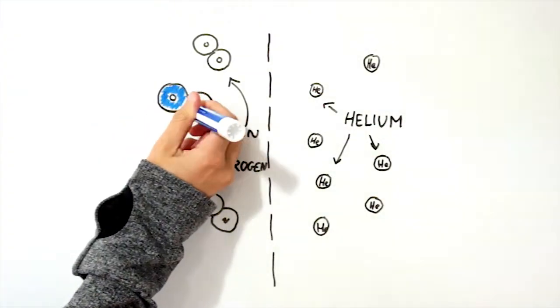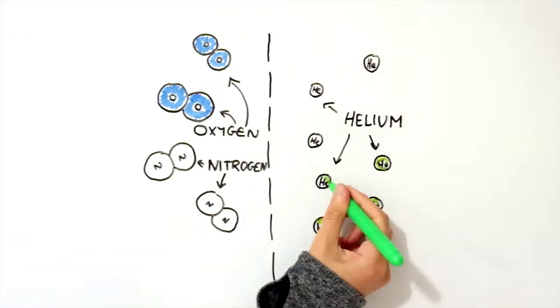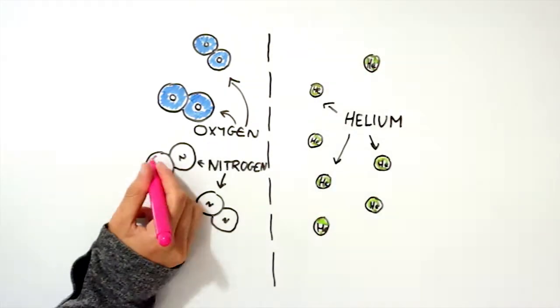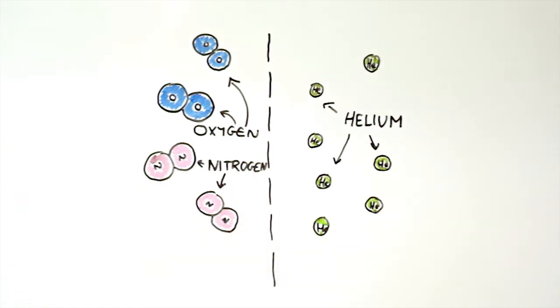In their gas form both oxygen and nitrogen are diatomic, which means that two oxygen molecules are bonded together, and two nitrogen molecules are bonded together. This makes them much bigger than helium.